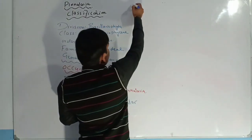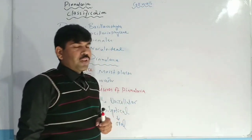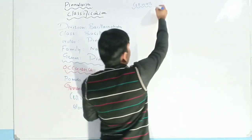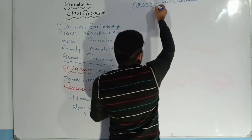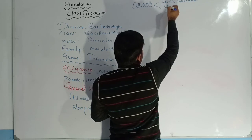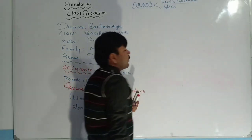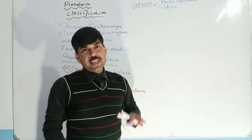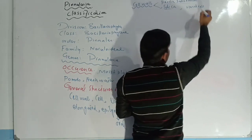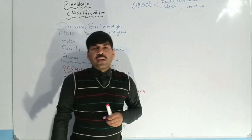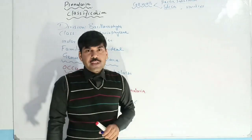If we talk about the cell wall, then the cell wall is composed of pectic substances and silica. Silica is present in the cell wall, and due to the presence of silica, the cell wall of Pinnularia is hard. The impregnation of silica makes the cell wall of Pinnularia very hard.